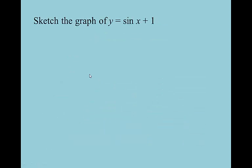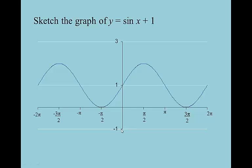Let's sketch the graph of y = sine x + 1. This takes the sine curve and simply adds 1 to it. Normally the sine curve goes between negative 1 and 1; this is literally picking it up, moving it straight up one unit, and dropping it back down. It doesn't change the domain. It doesn't change the period. It does change the range — instead of negative 1 to 1, we're going from 0 to 2.